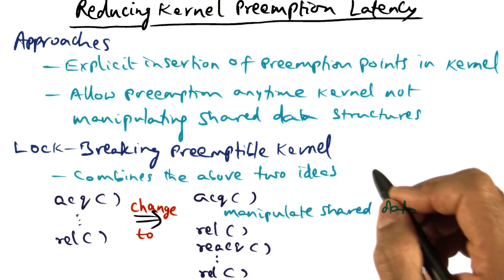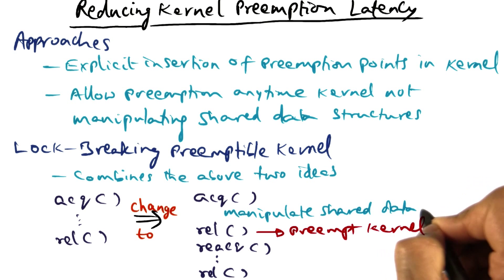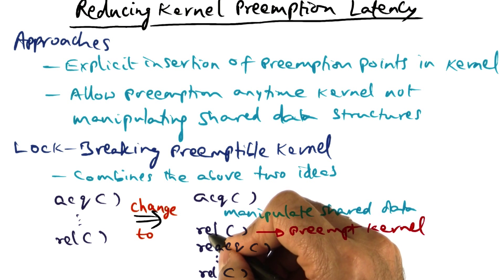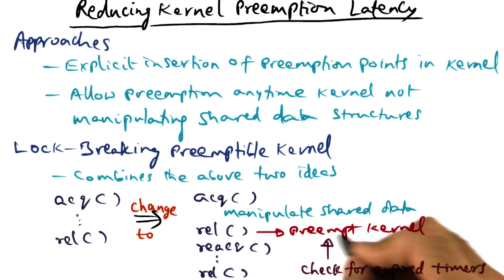What is the advantage of doing this? What we can do is, at this point, once we're done with shared data, we release the lock. And at this point, we can preempt the kernel safely. And since we can preempt the kernel at this point, it's a great opportunity to check for expired timers.